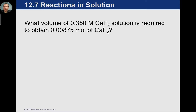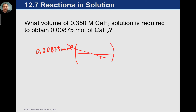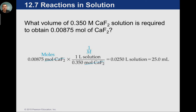We can do the same in reverse. With 0.00875 moles, we cancel moles by putting them on the bottom, use 1000 milliliters for volume, and flip capital M (0.350) upside down. Milliliters remain, and we get our answer of 25 mL back. The textbook shows the liters route — moving the decimal three spaces — but our approach avoids that conversion.